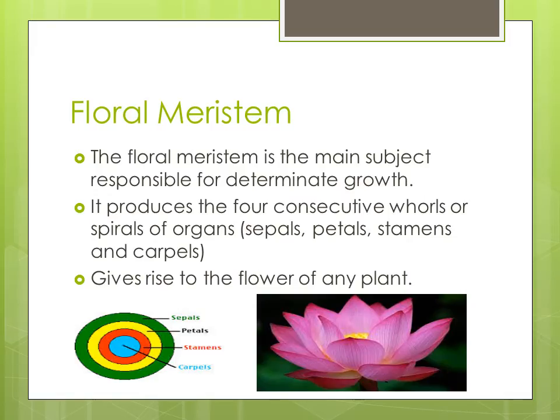In order to understand the concept of determinate growth, we need to understand what the floral meristem is. The floral meristem is the main subject responsible for determinate growth. It produces four consecutive whorls of organs — sepals, petals, stamens, and carpels — which are all located in the flower itself. The floral meristem gives rise to the flower of the plant.